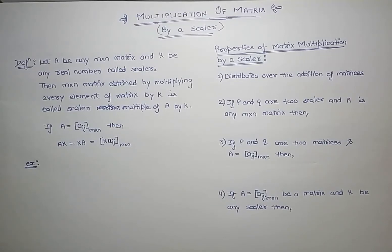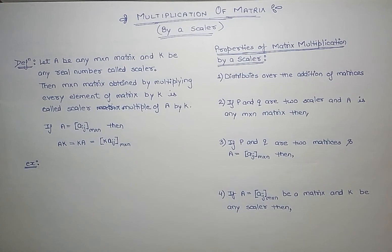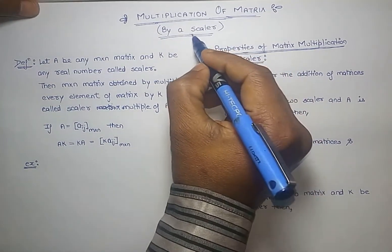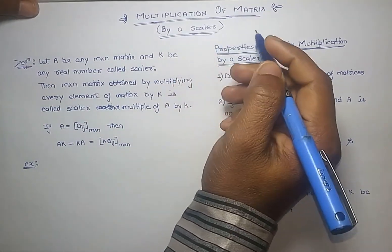Hello friends, welcome to Sure Grade Success. In this video we are going to learn about multiplication of matrices. There are two kinds of multiplication: one is by a scalar, that is by a real number, and the other is multiplication of two matrices, that is one matrix by another matrix. Let's start with the scalar one first.